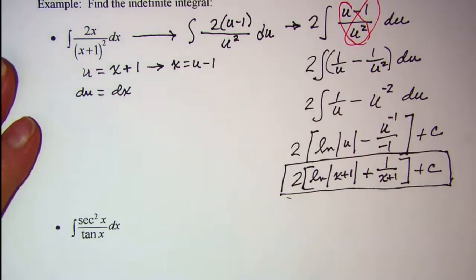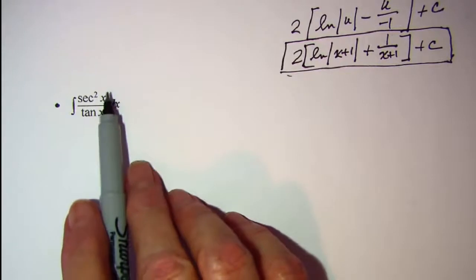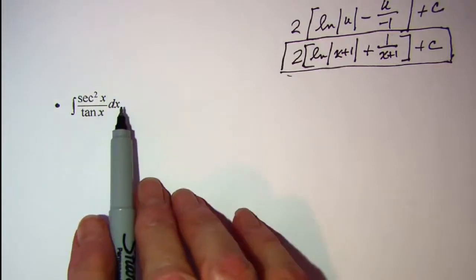Let's do another one. All right, we're integrating secant squared x over tangent x dx.